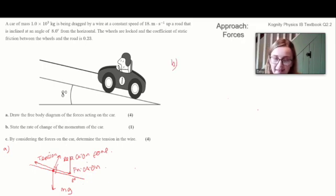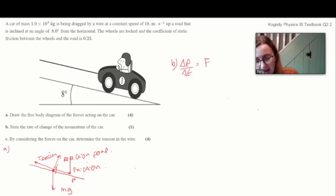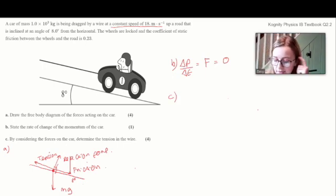Part B then asks us to state the rate of change of momentum of the car. So we know that our rate of change of momentum, which we can write as delta P over delta T, is actually our force, our net overall force. And so let's think about this. We're told our car is moving at a constant speed of 18 meters per second. If a car is moving at a constant speed, or any object is moving at a constant speed for that matter, Newton's first law tells us that there must be no net force acting on the vehicle. So therefore, the change of momentum has got to be equal to zero.